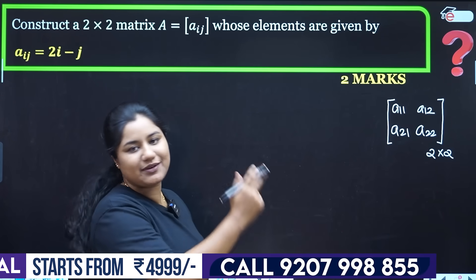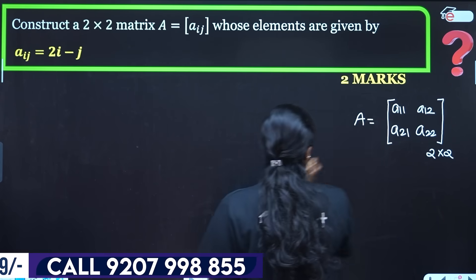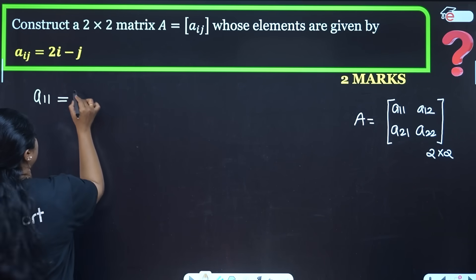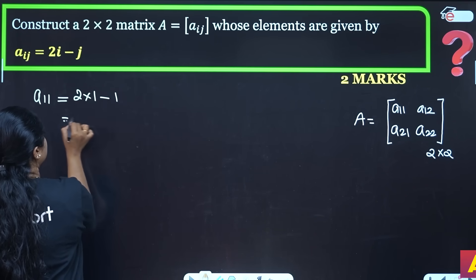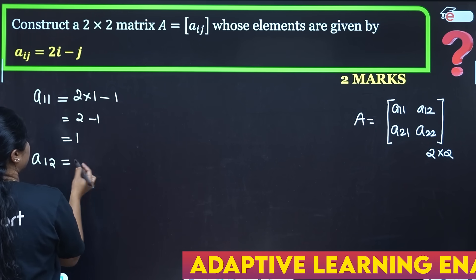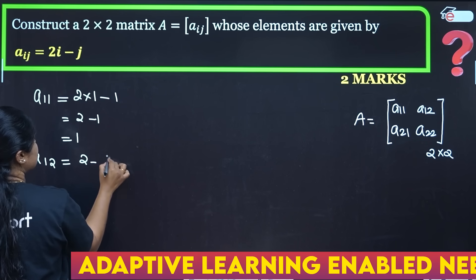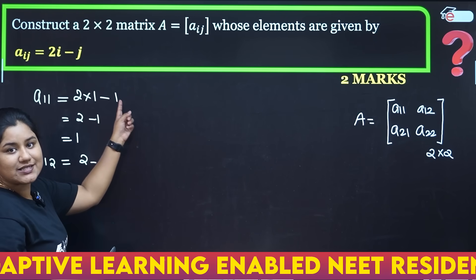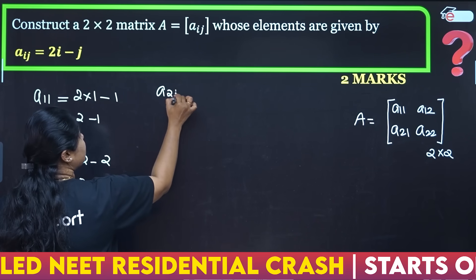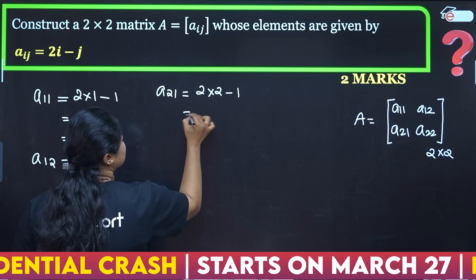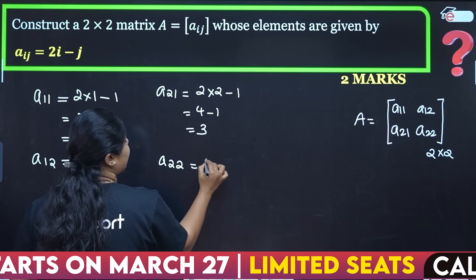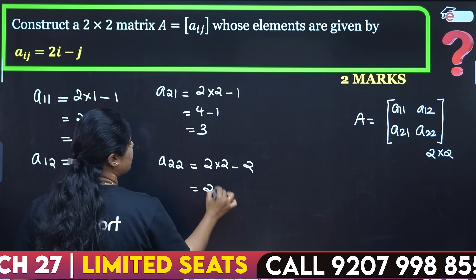We have to look at the same element here. So if we find a11, with i=1, j=1, then 2×1 minus 1 equals 1. If we find a12, that is 2×1 minus 2, which equals 0. Now for a21, that's 2×2 minus 1 equals 3. And a22 gives 2×2 minus 2, which is 4 minus 2 equals 2.